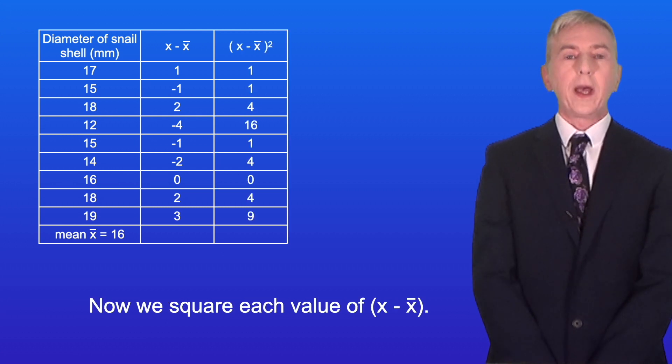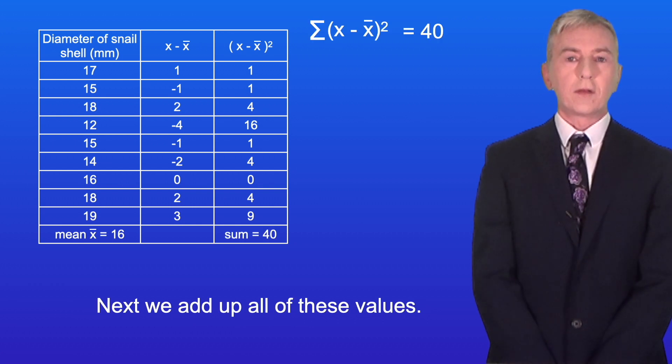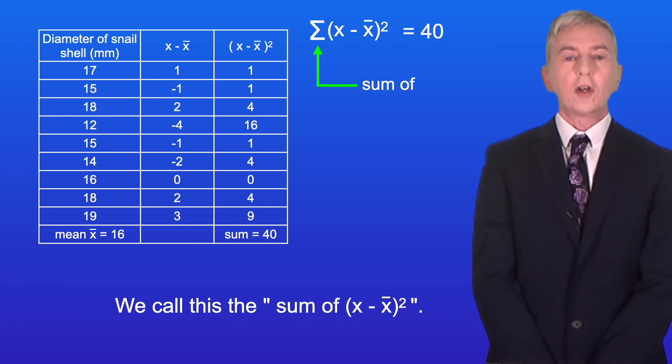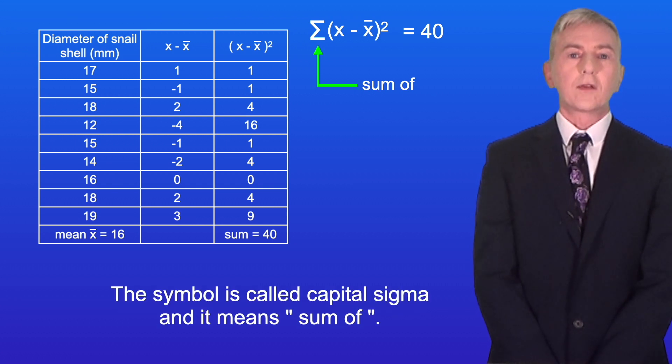Now we square each value of x minus x-bar. Next we add up all of these values. We call this the sum of x minus x-bar squared. The symbol is called capital sigma and it means sum of.